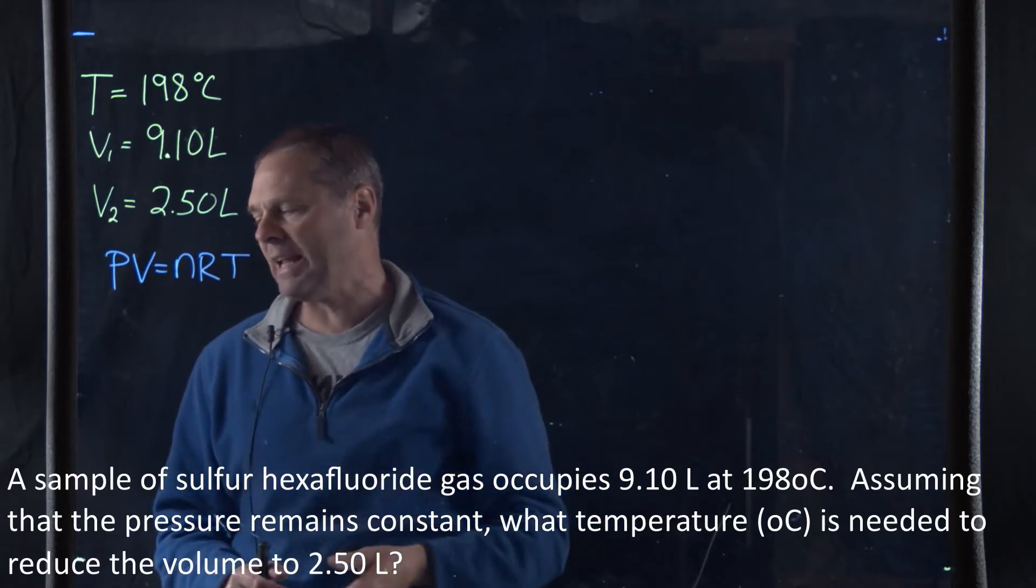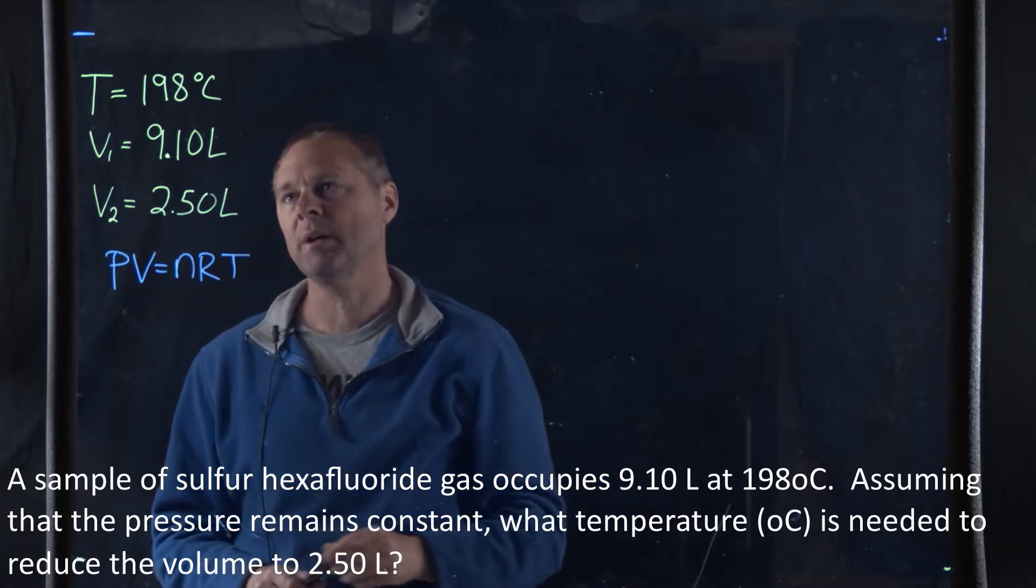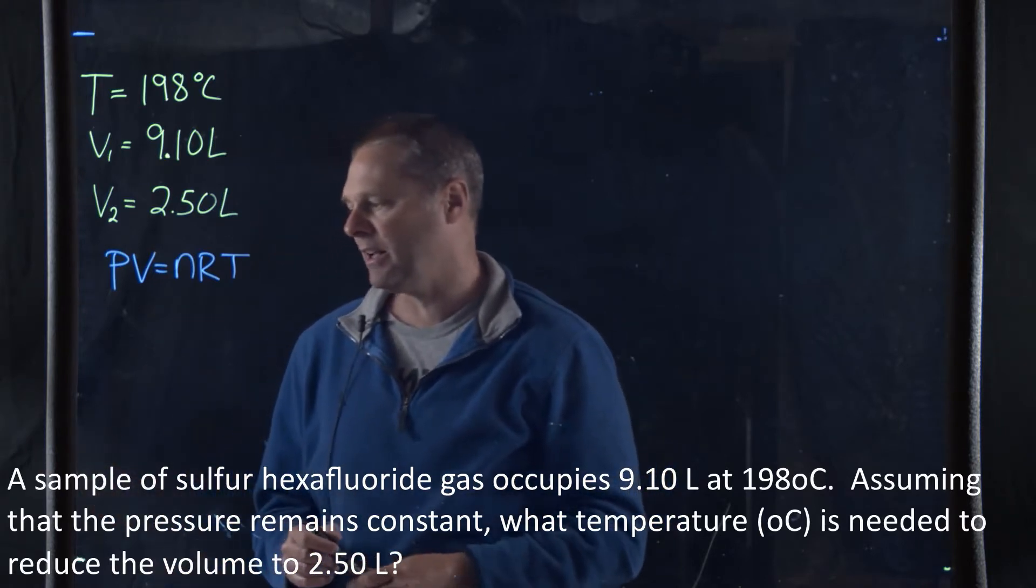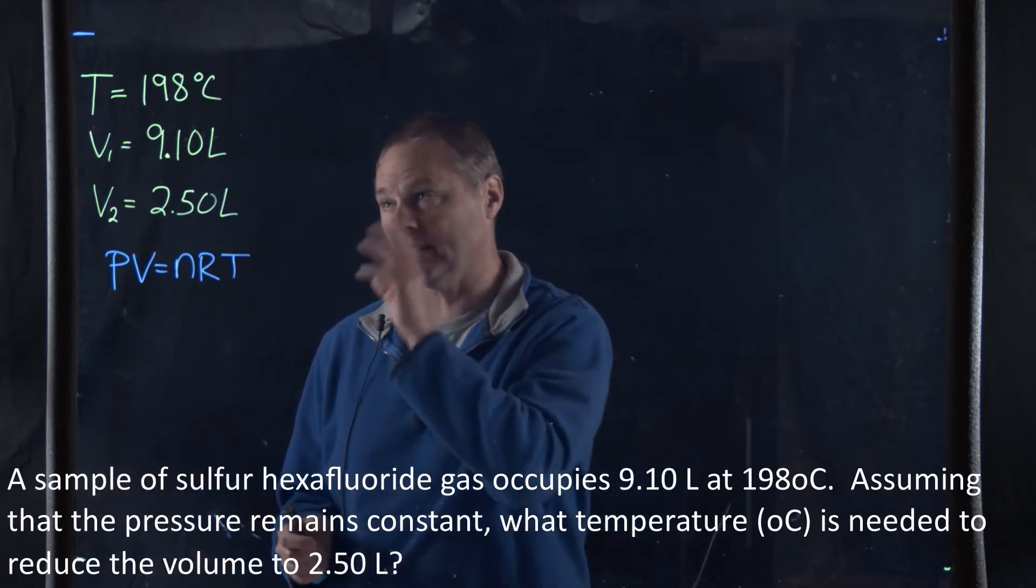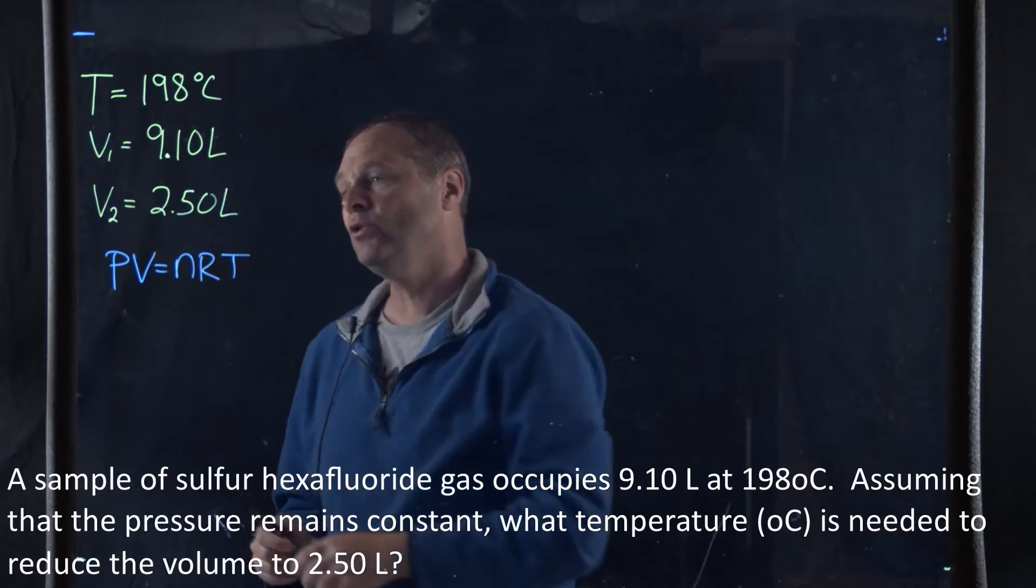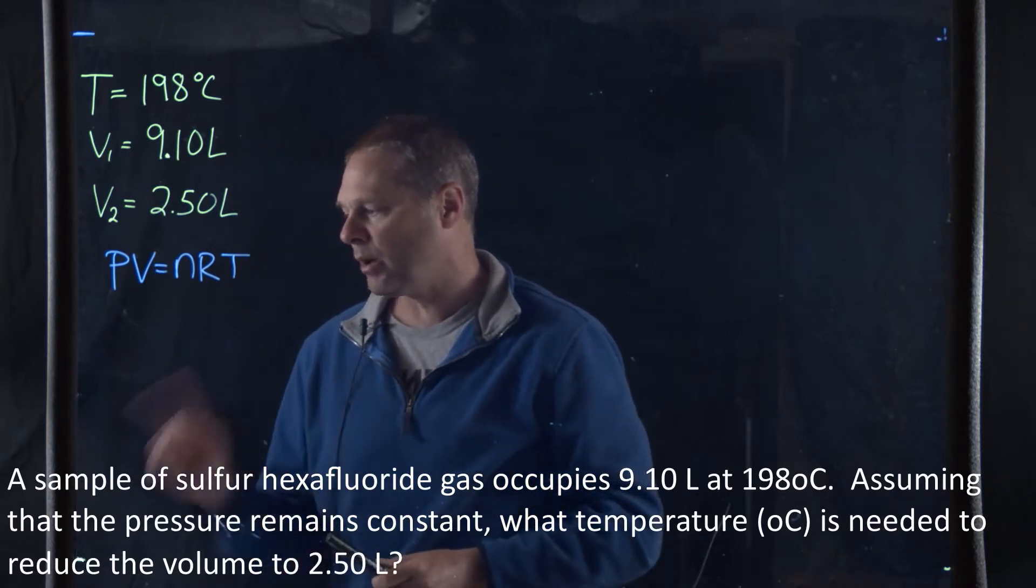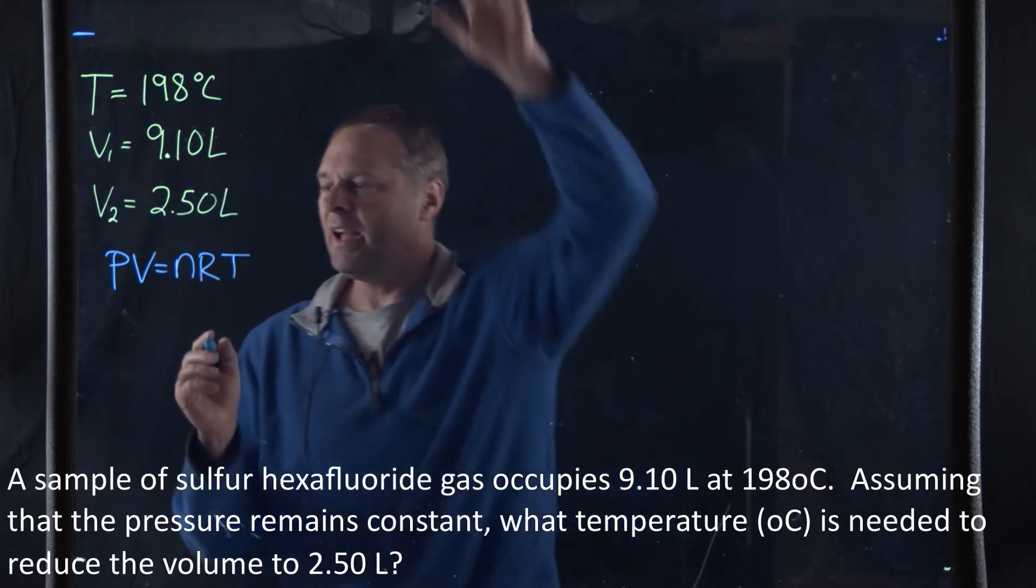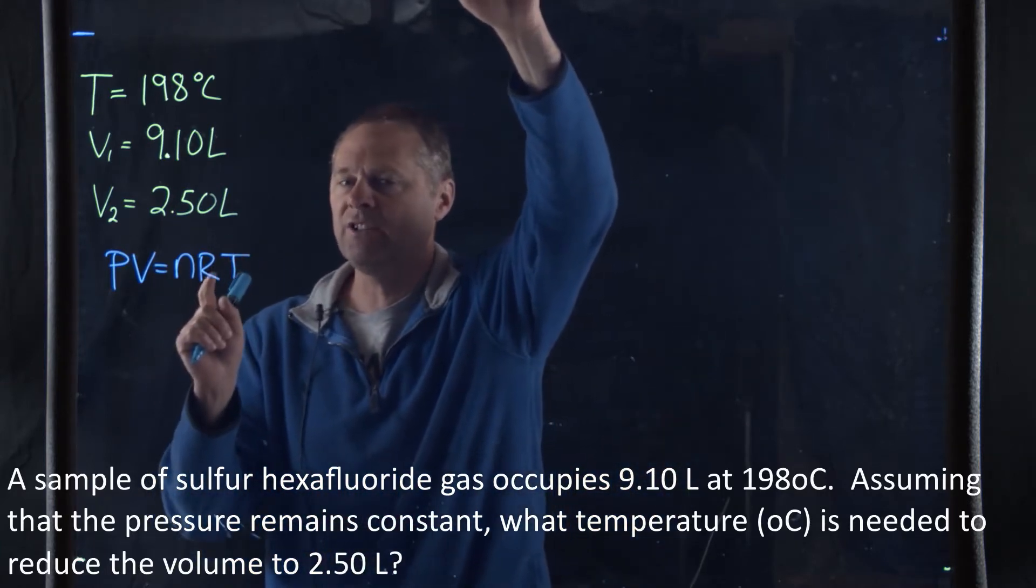What we have here is we're changing something. We start out with a system that's going to be at 198 degrees Celsius, and it's not going to stay at that temperature. We need to find the new temperature, but the pressure remains the same. Pressure does not change. Anytime we're changing a situation, we can always write this in terms of the initial.